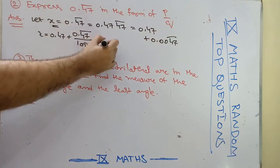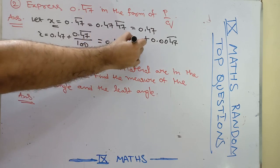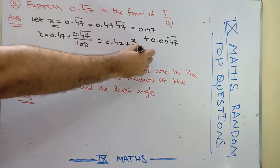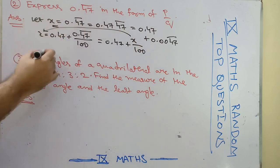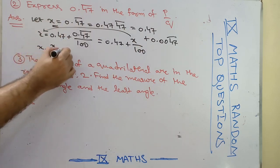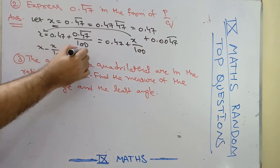So we will substitute that: 0.47 plus x by 100 simply. Now transport this x by 100 onto this side. So what it becomes? x minus x by 100 is nothing but 0.47.